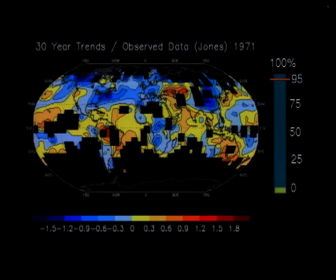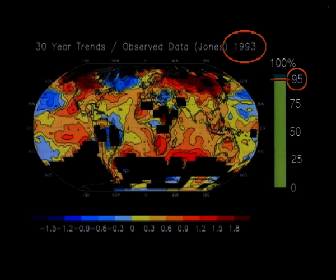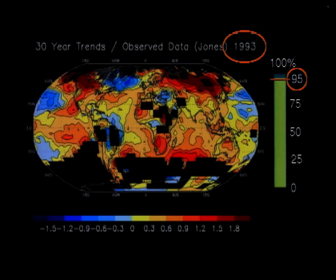In 1993, this probability passes the 95% mark. We have attempted to visualise here in simple terms the results of rather complex statistical computations. Stated briefly, greenhouse warming is not only a threat for the future, but very probably a fact of today. We are 95% sure that we have already begun to heat our planet.